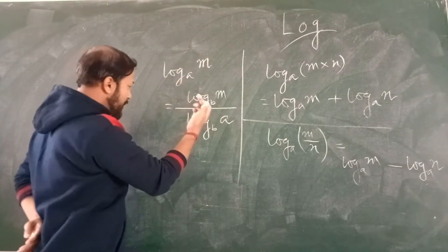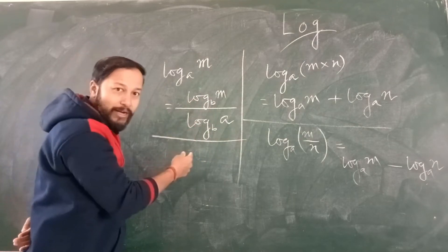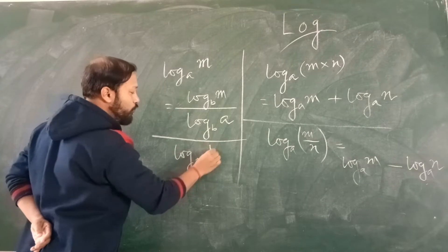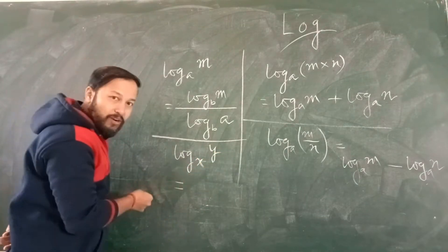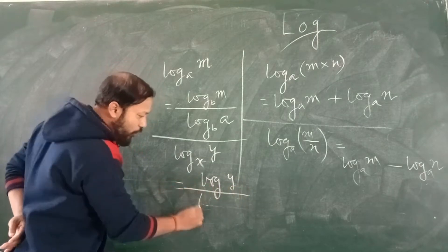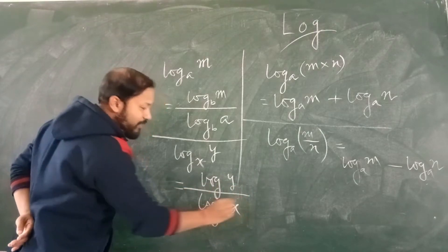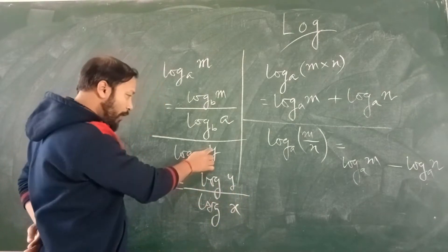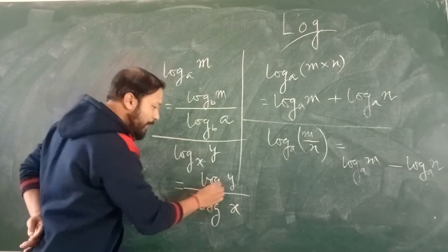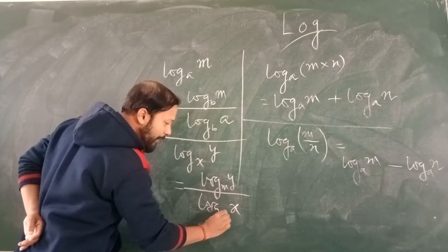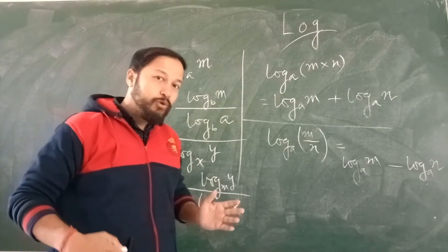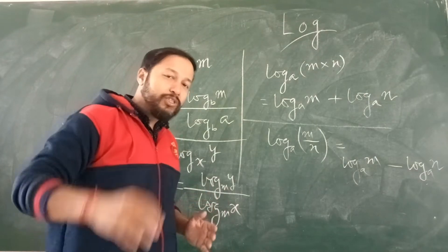So, log A to base A. Another example: log of X to the base Y can be written as log Y divided by log X — wait, log of Y divided by log of X with any common base M. Bases must be the same in numerator and denominator. So these three formulas are there. We have to use these formulas to solve the sums. Let's start.